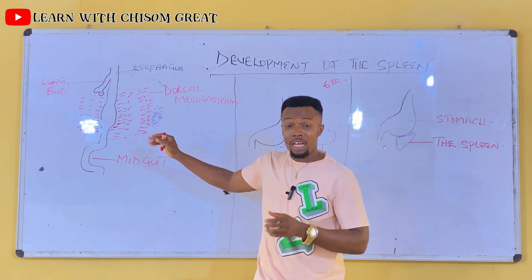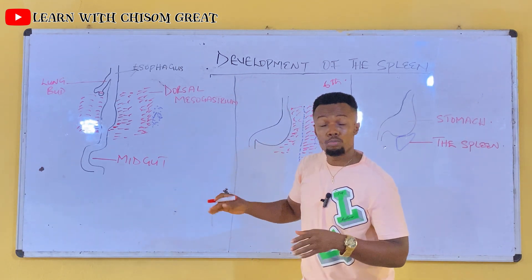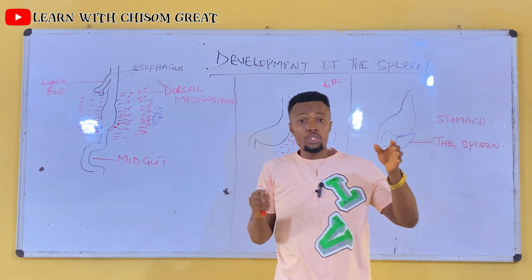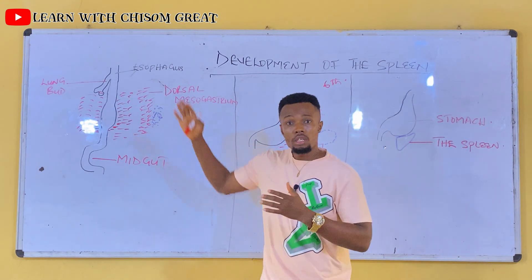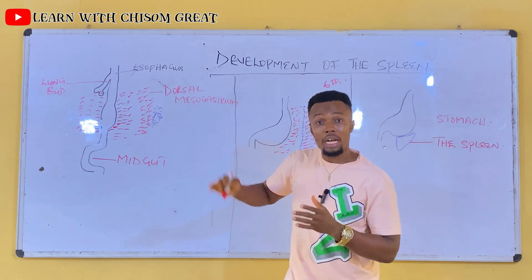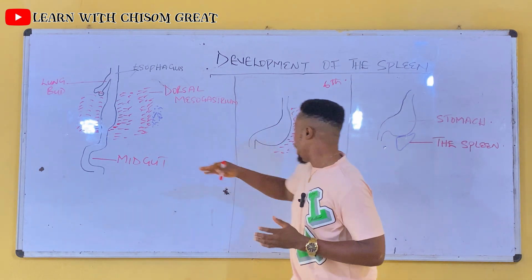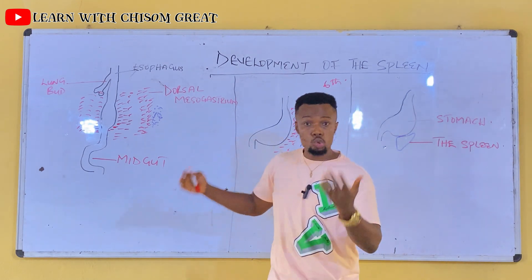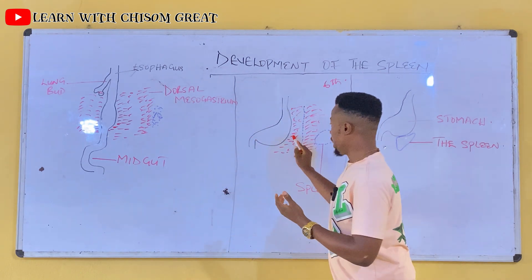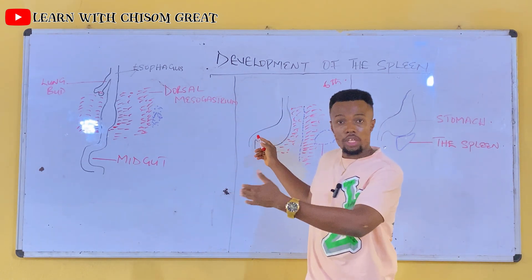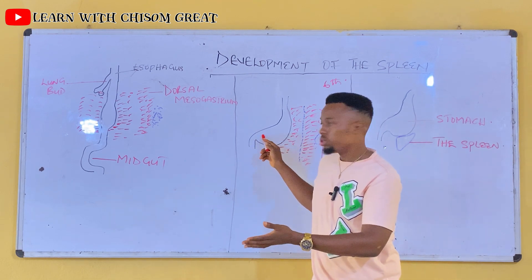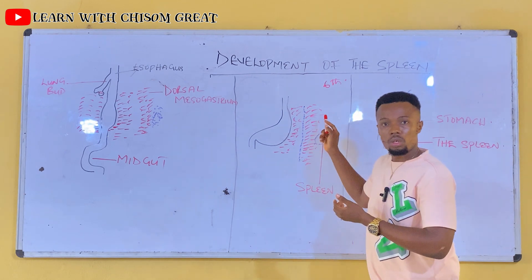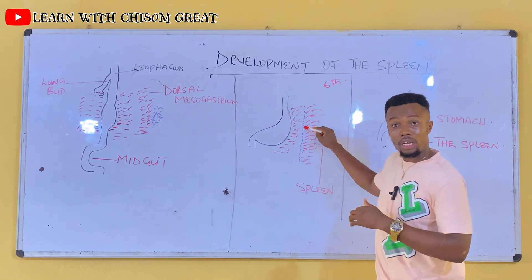As this mass is coming together, remember that the dorsal mesodersum is divided into two. When we did the teaching on the development of the stomach, I noted that the dorsal mesodersum is divided into two. This part of the dorsal mesodersum lies closer to the stomach — the developing stomach — while this part lies closer to the abdominal wall. So this divides the dorsal mesodersum into two.